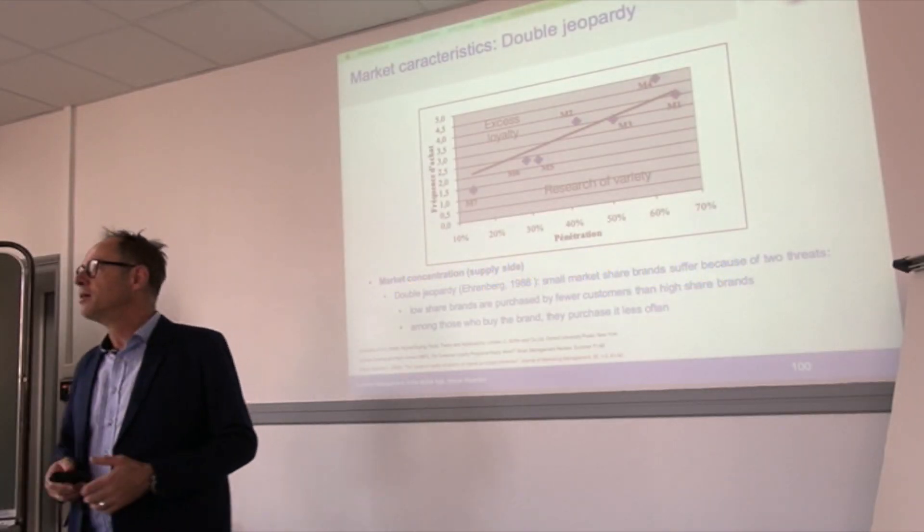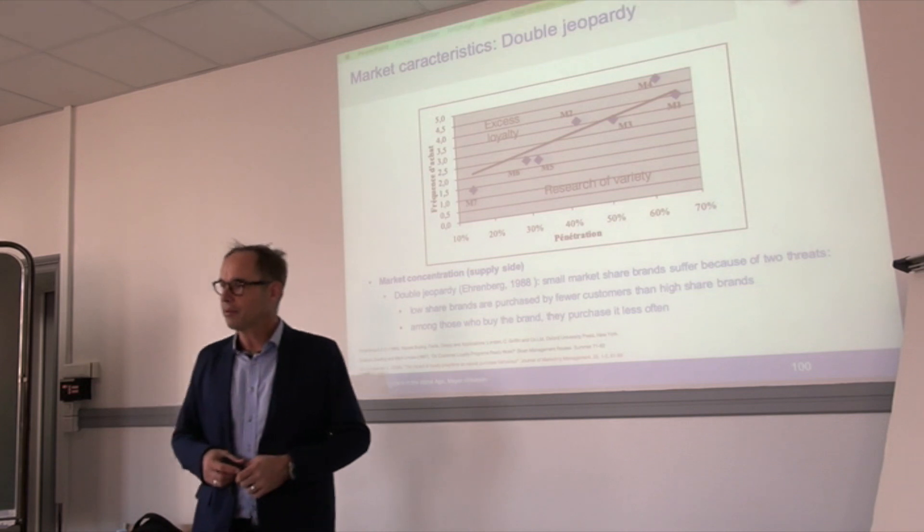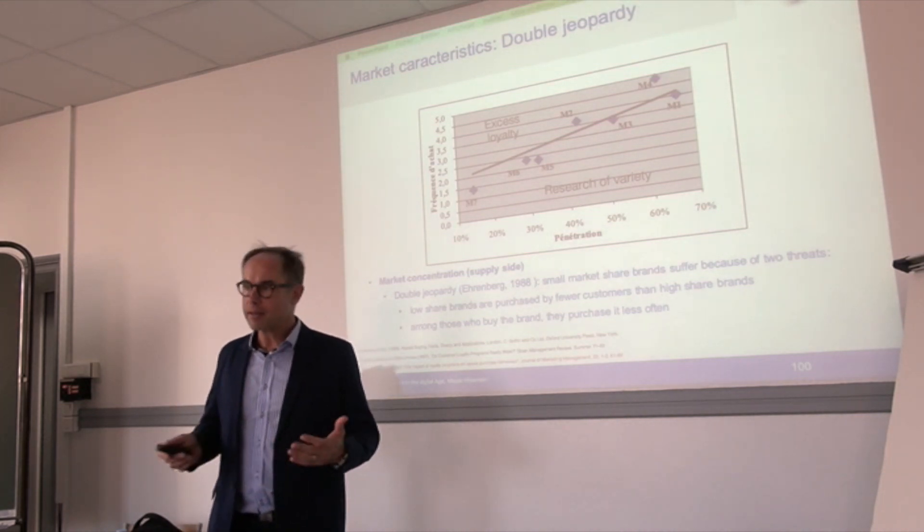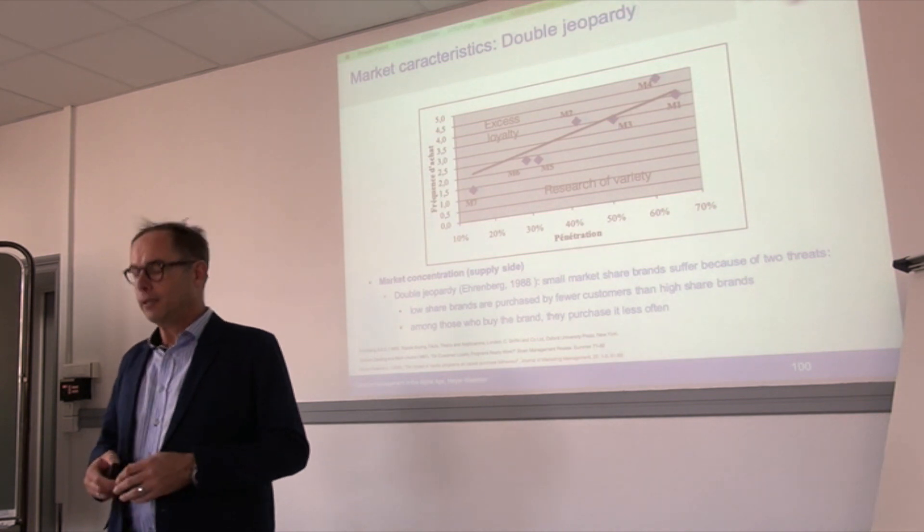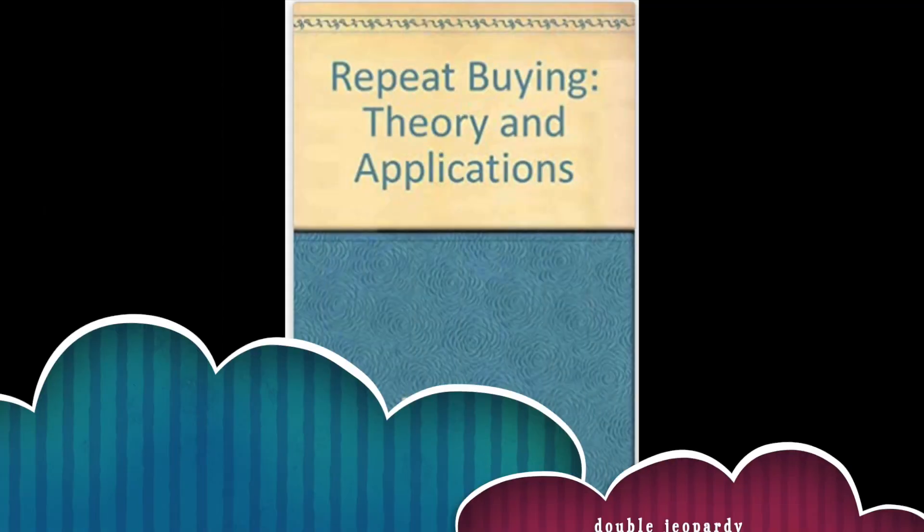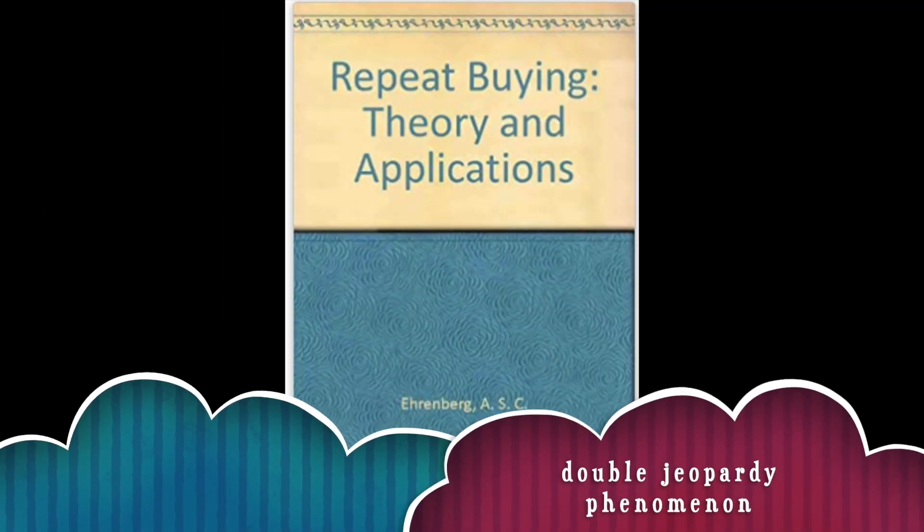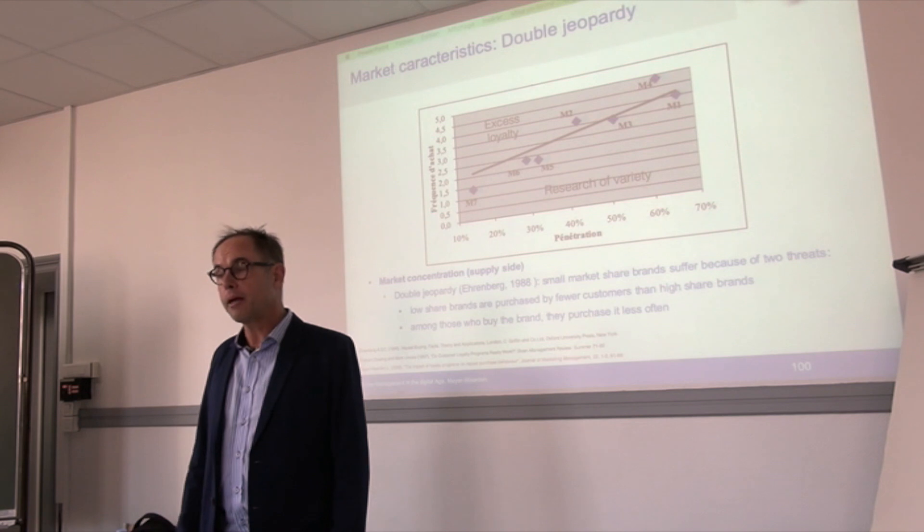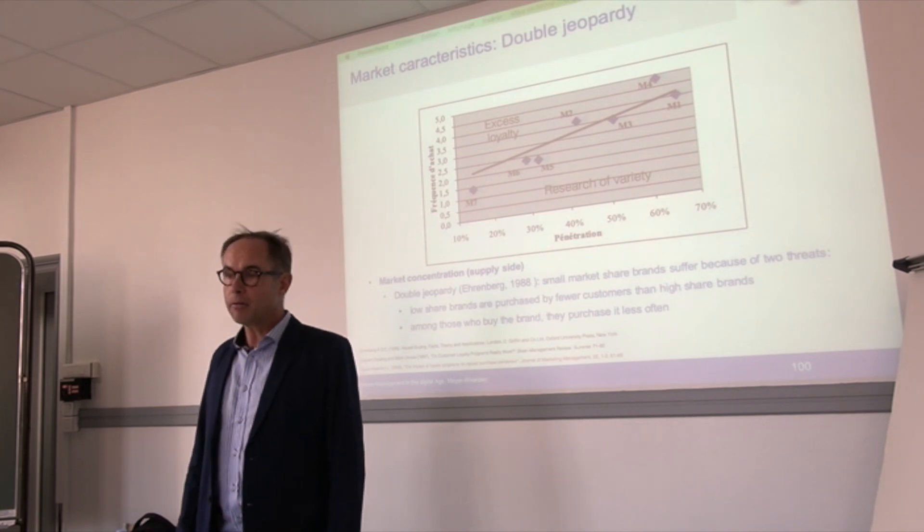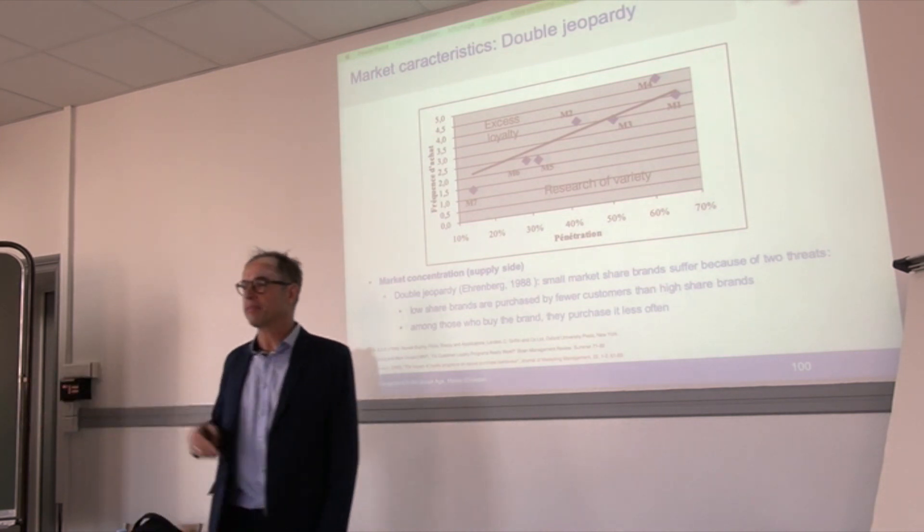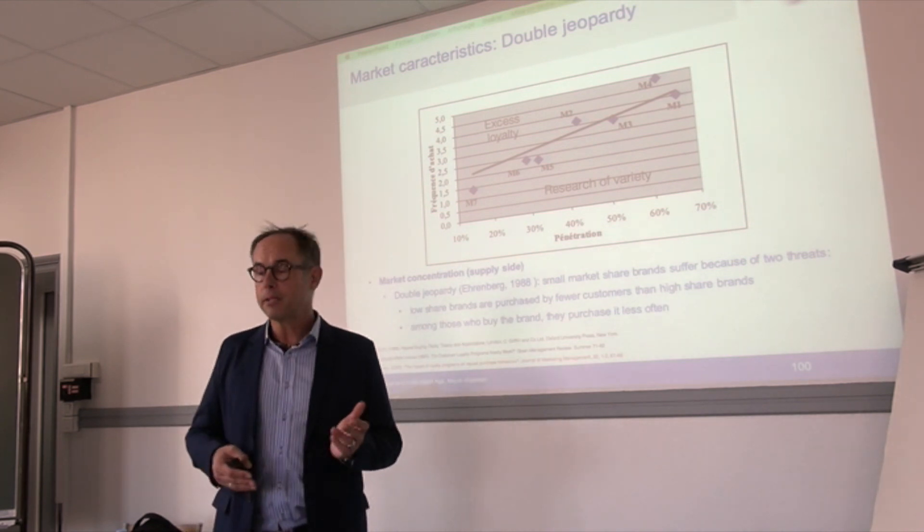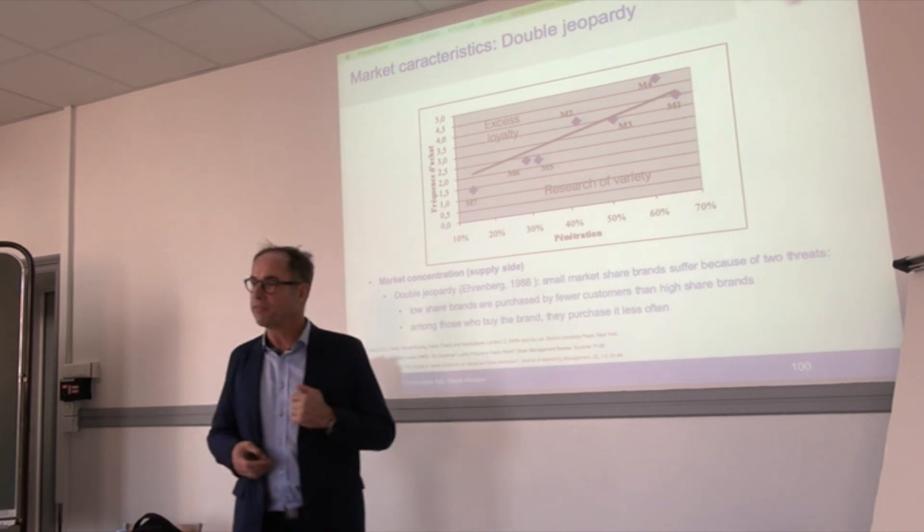We have very few laws in marketing. Of course we are social science, so we cannot establish laws, but double jeopardy is a law in marketing that was discovered by Andrew Ehrenberg. He found double jeopardy and replicated it with many different surveys in different sectors, companies, and time frames. Replication was the basis of his research, and in his replications he found this double jeopardy phenomenon.